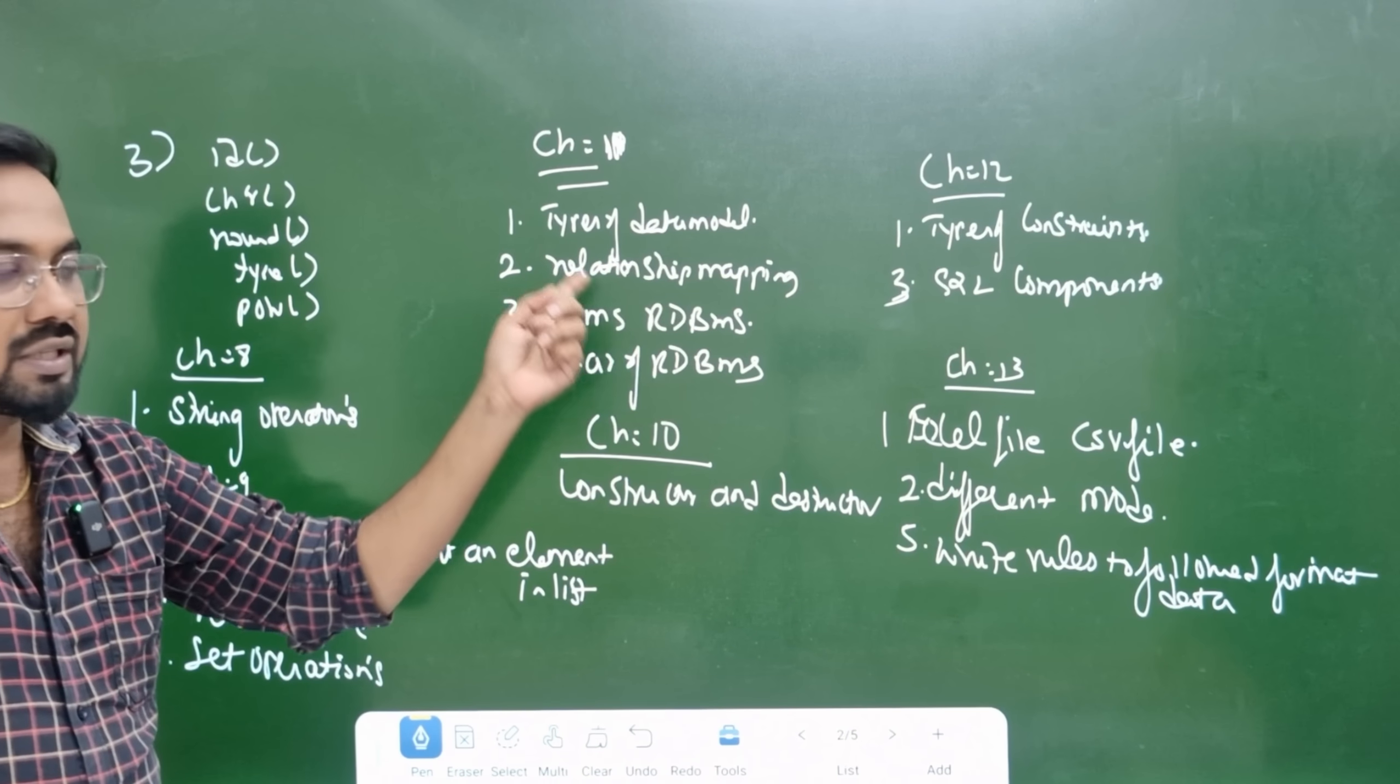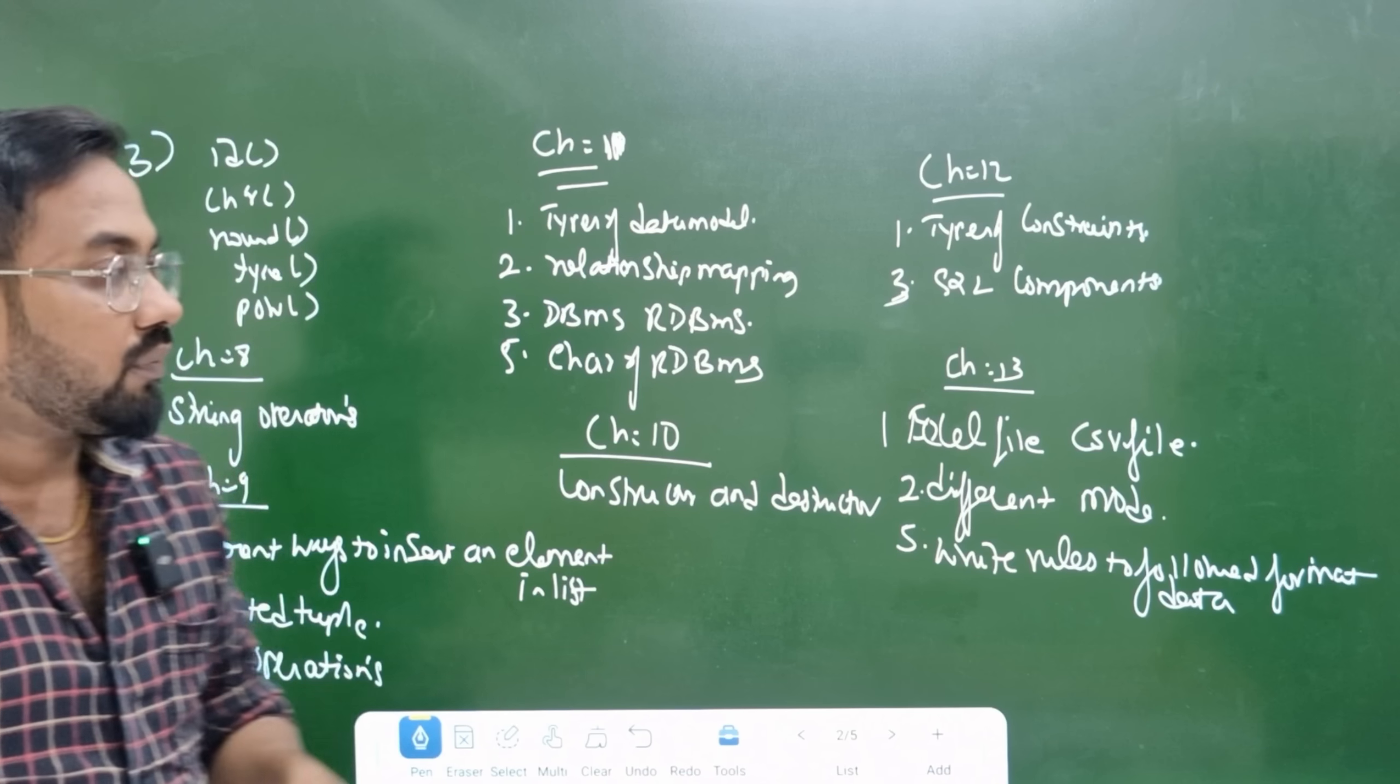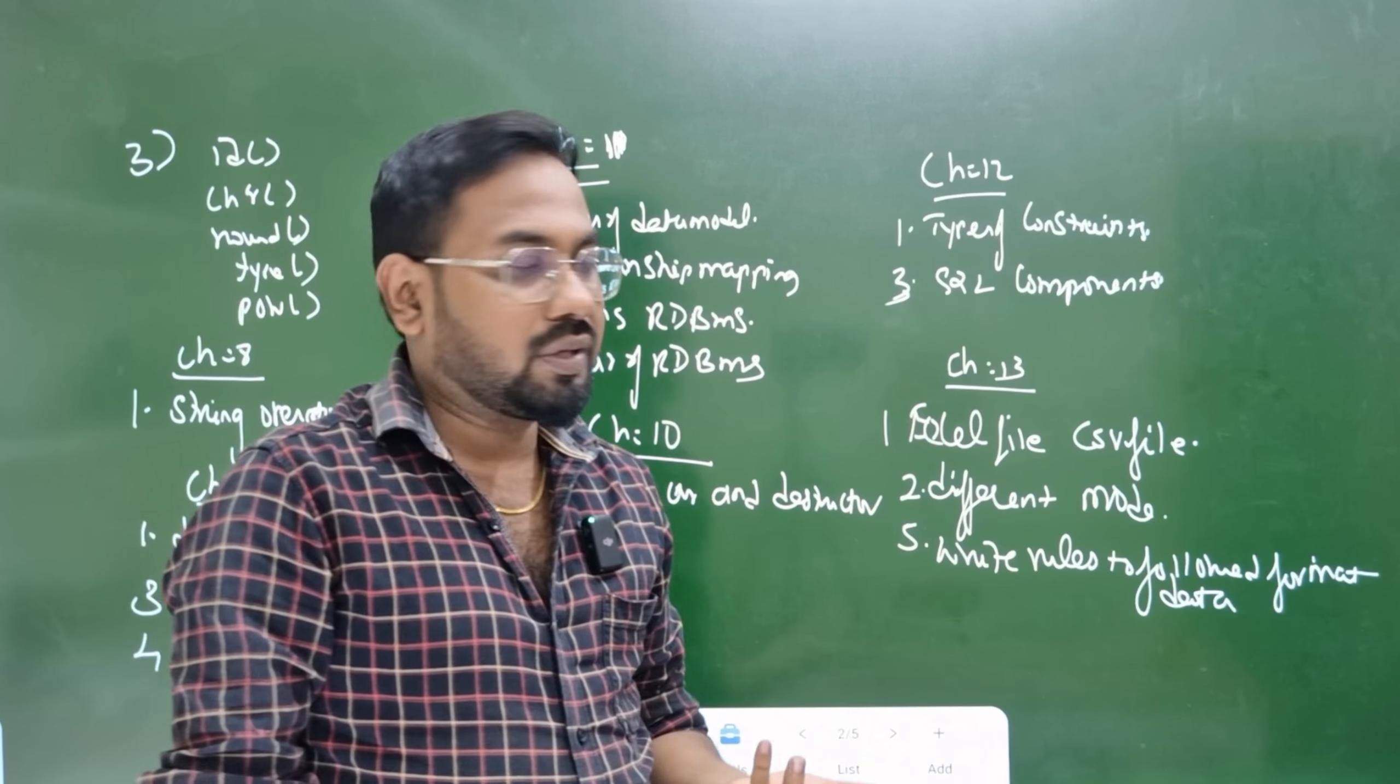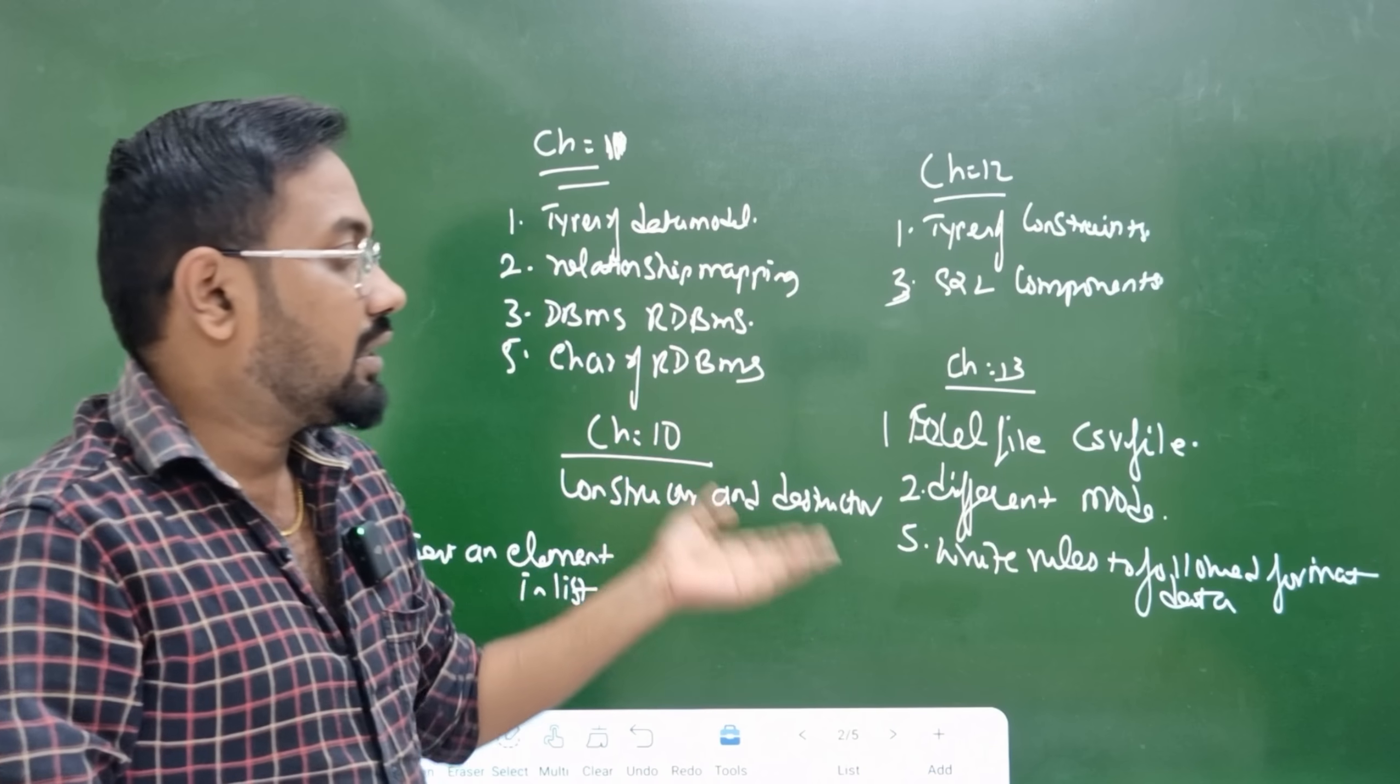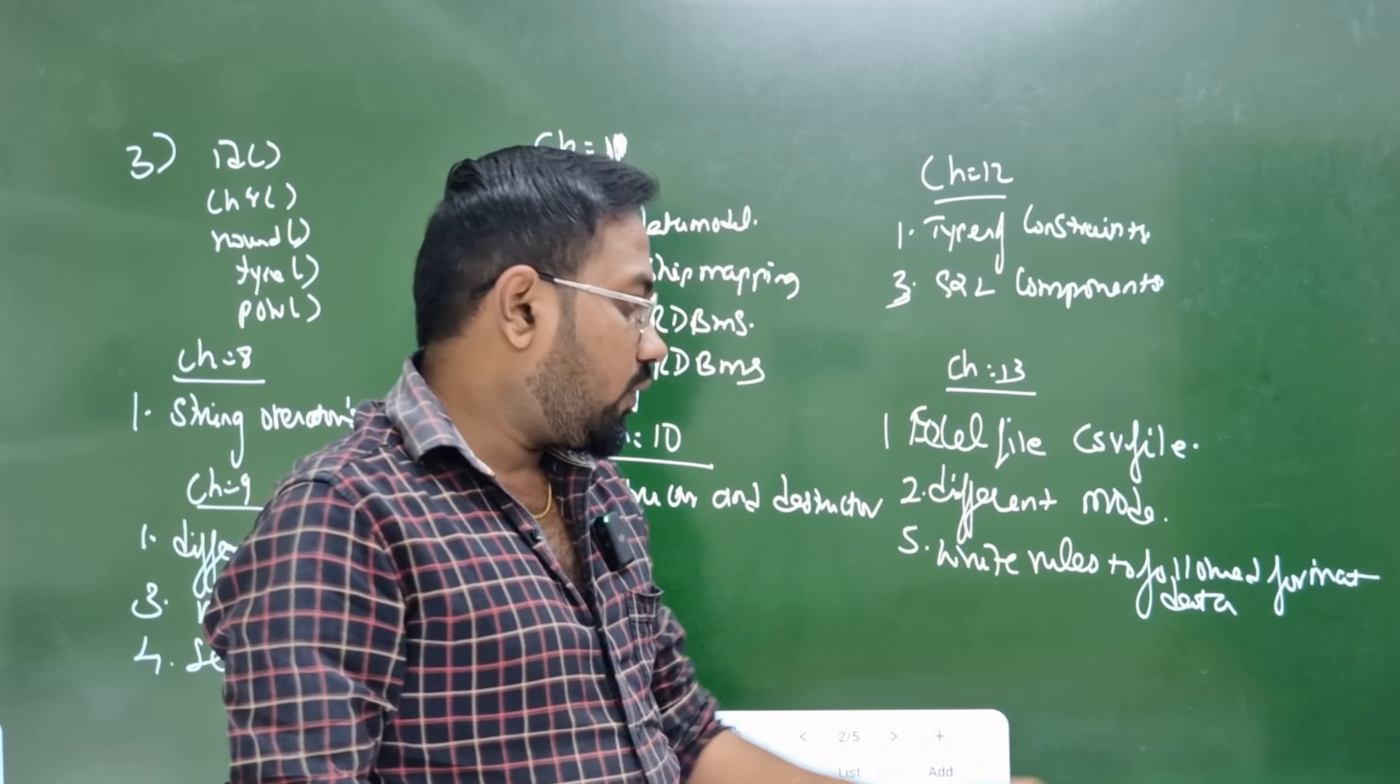Chapter 10 is constructor and destructor with examples. Chapter 12 covers types of constraints and SQL components. Chapter 13 has Excel file and CSV file - very important difference. Different modes of file handling and the right rules to follow for formatting data.